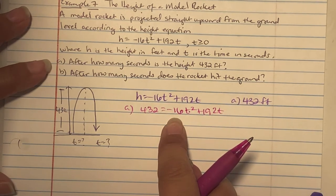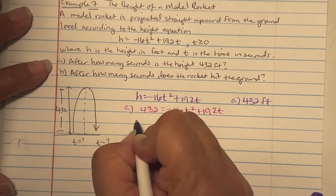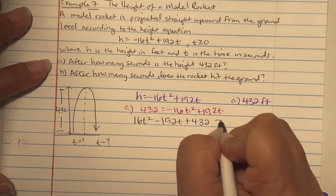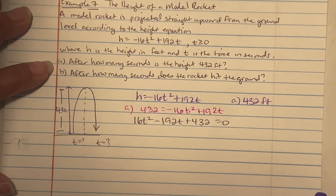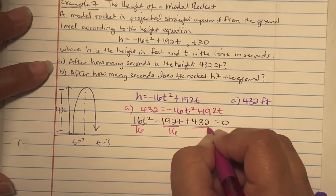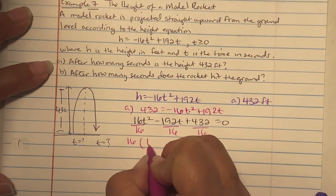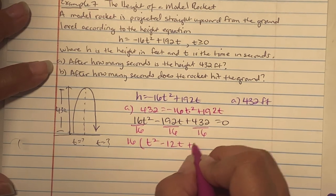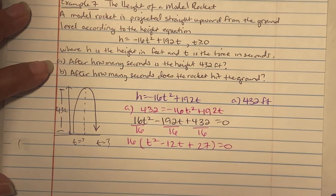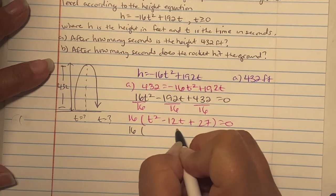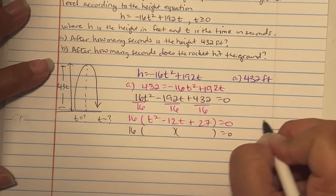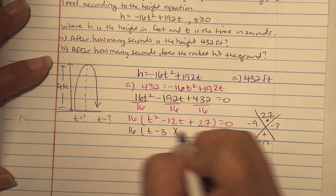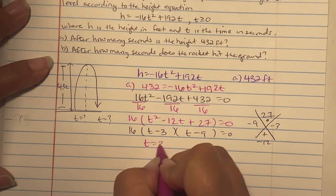Since I want the 16 to be positive, I'm going to move both items to the left by adding and subtracting. So I get 16t squared minus 192t plus 432 equals 0. To work with smaller numbers, factor out the 16. So I get t squared minus 12t plus 27. At this point, we can factor. 27 needs to multiply to be 27 and add to negative 12. So 9 and 3, if both are negative. t minus 3, t minus 9. So t equals 3, t equals 9. There are two time frames.